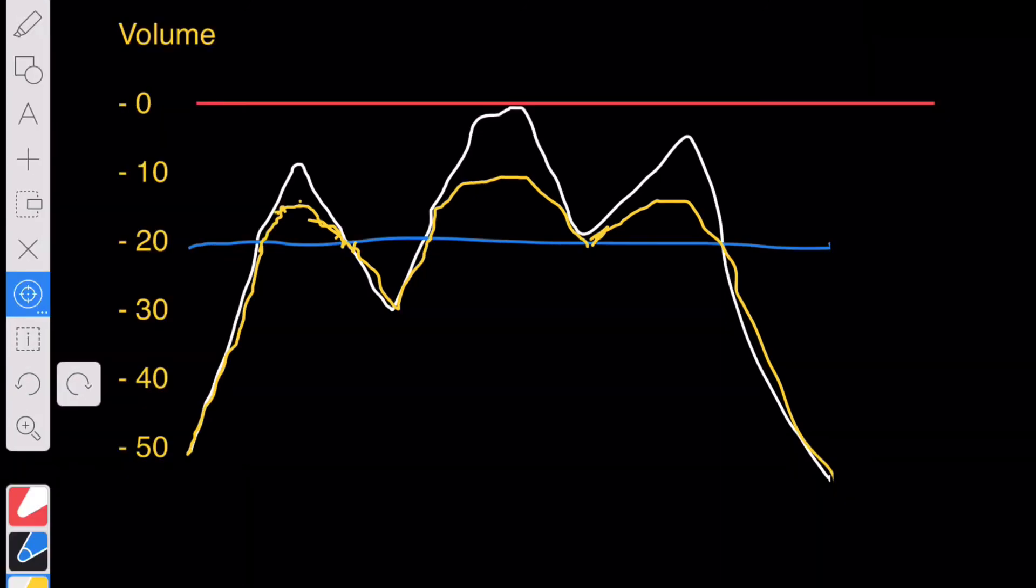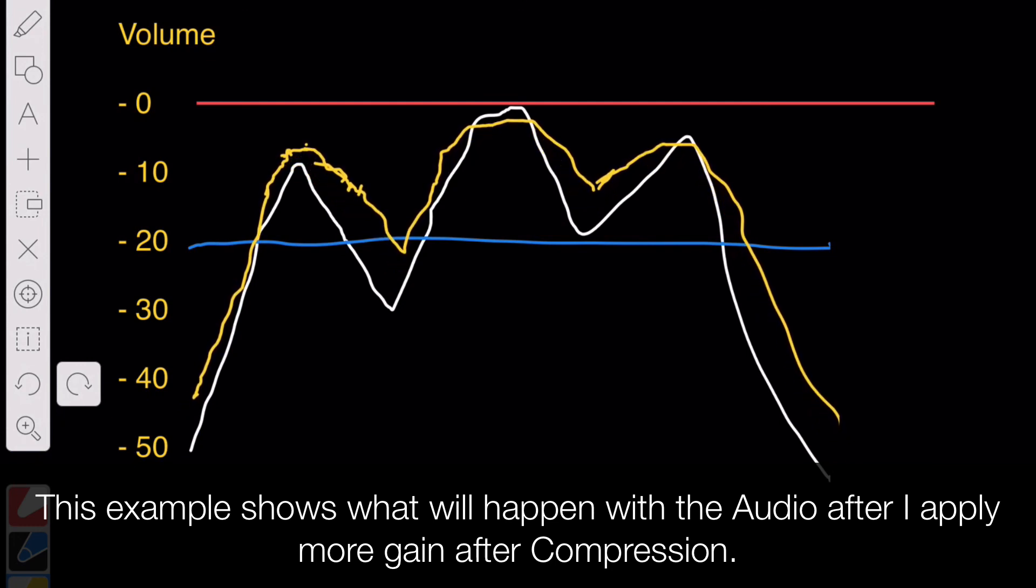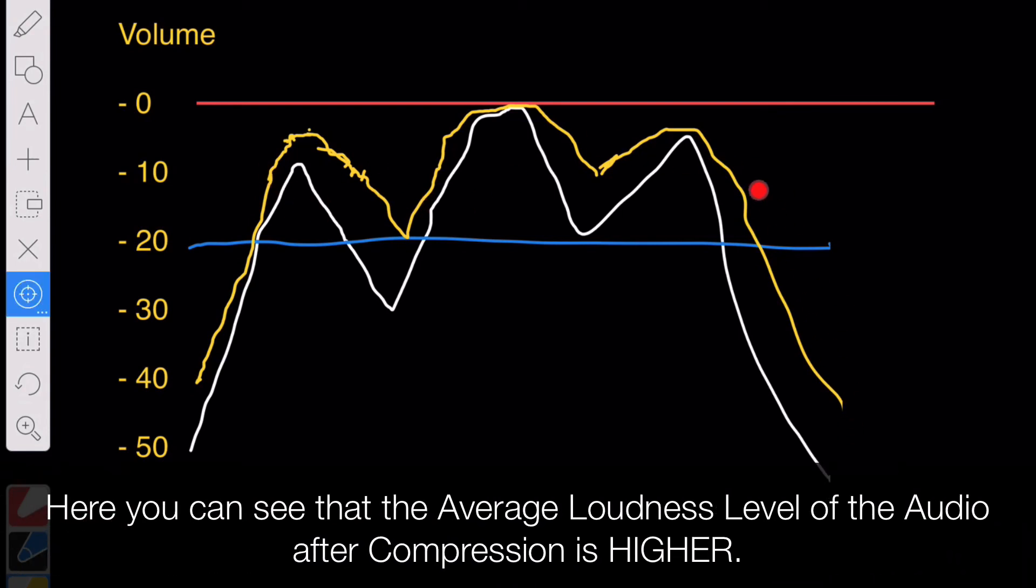To make this a bit more clear for you, let me just pull up the yellow line now. So the audio is peaking once again at the top of the digital scale. But as you can see now, the average volume of this yellow line, which was after compression have been applied, is higher than the white line, which was before the compression.